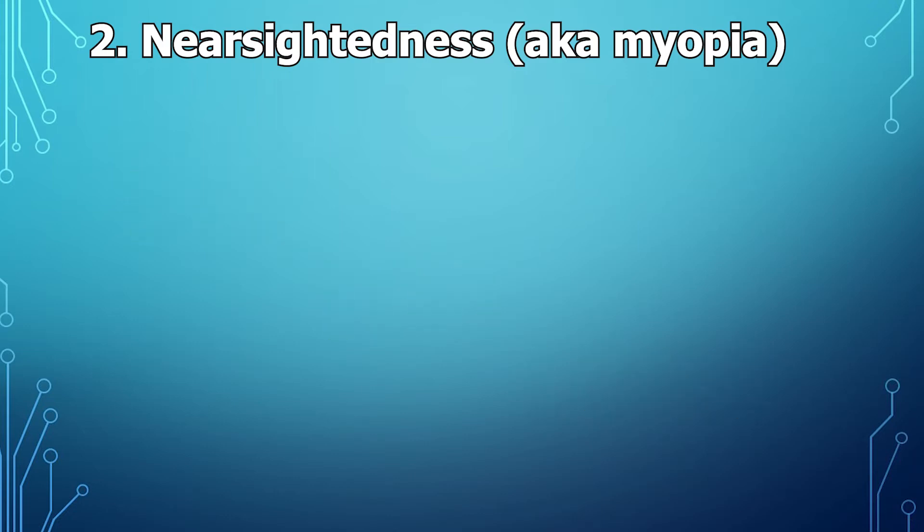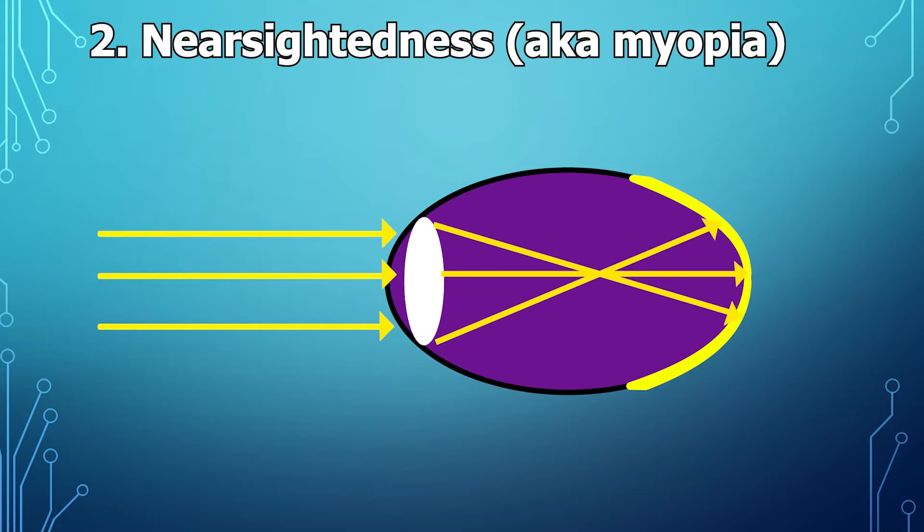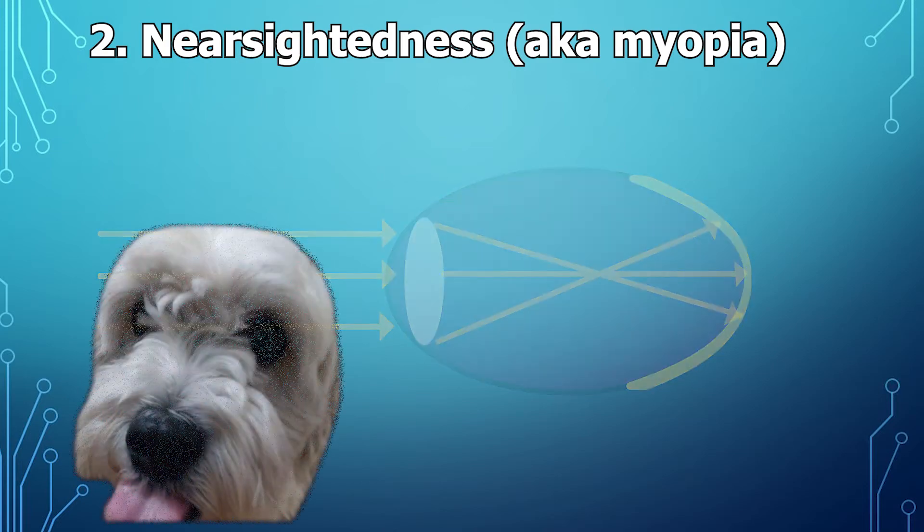Let me show you what I mean. You have this eye, this very long eye, but light comes through the same way as it did before. It's going to hit the lens but this time it's going to get focused in front of the retina. So by the time it gets to the back it's not a clear image and what you see is blurry.